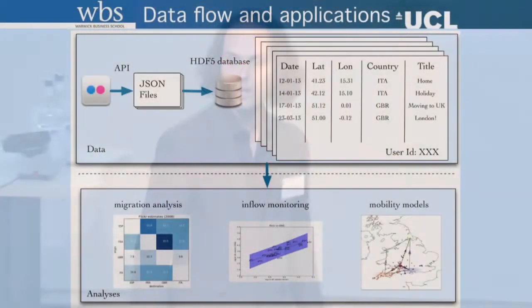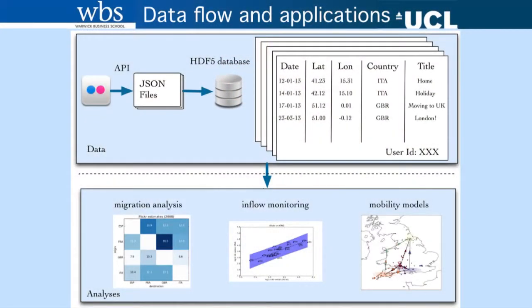For each one of these we have user ID and the set of coordinates from which we can infer a country, and then various other metadata such as title and tags. By analyzing, filtering, and aggregating these trajectories, I'm going to show you a few analyses I've done on this data set.